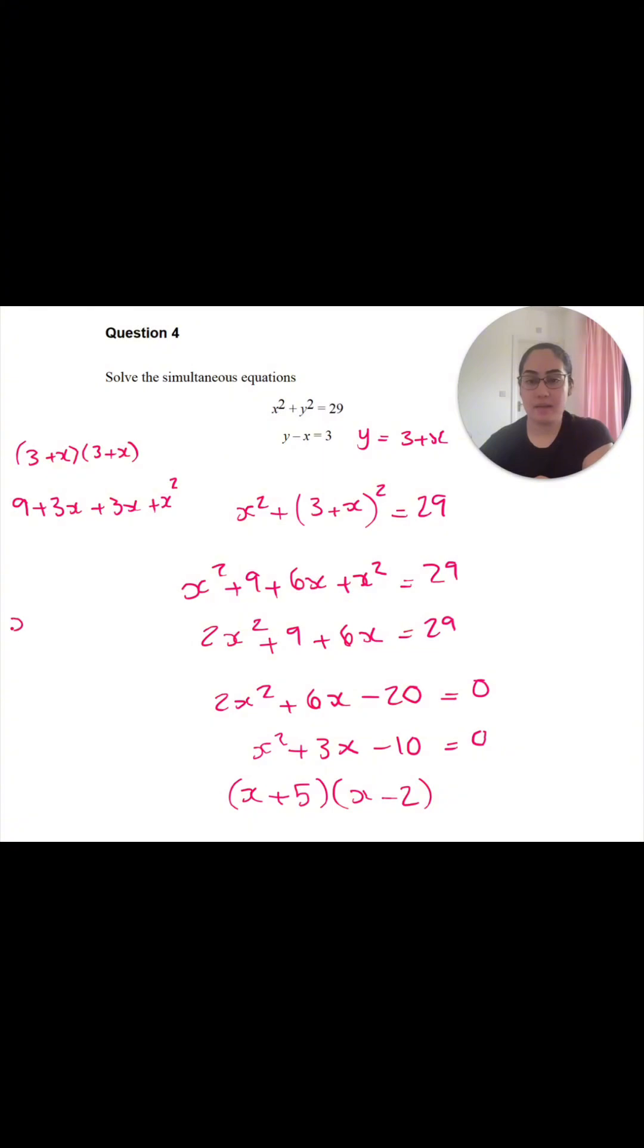So I have two x values. x could either equal negative 5 or 2. Remember, this whole equation is equal to 0. So if I want to find a value of x, basically x plus 5 is equal to 0, x minus 2 is also equal to 0. So that means x is equal to minus 5.